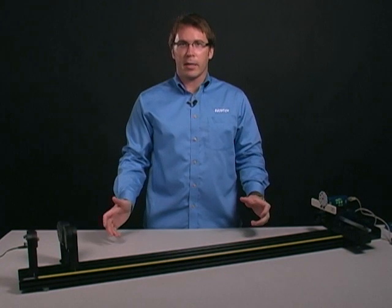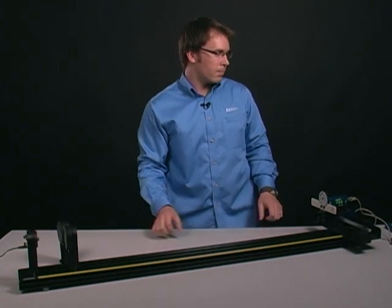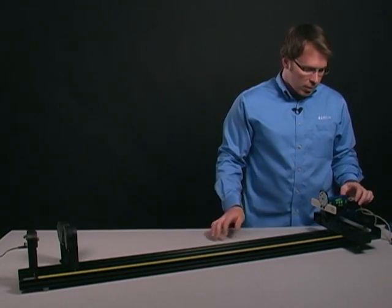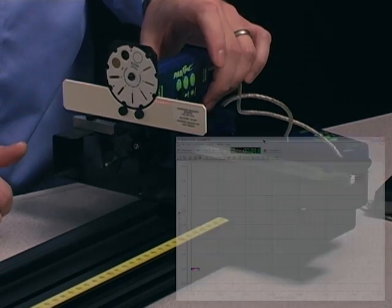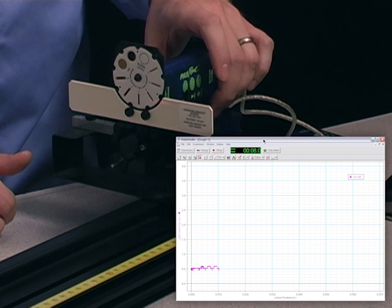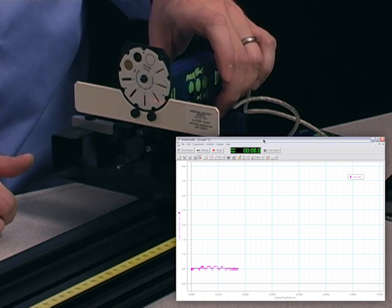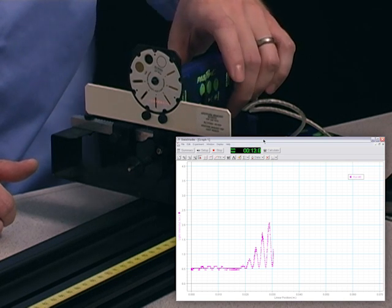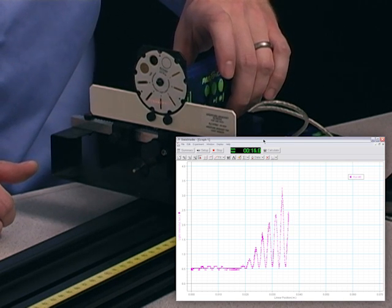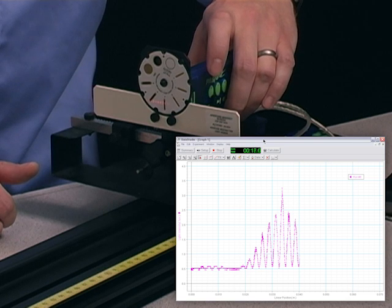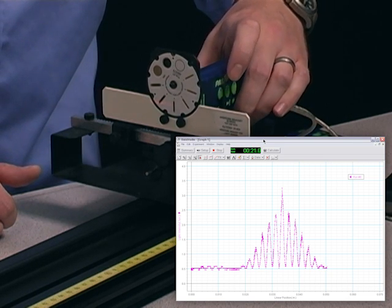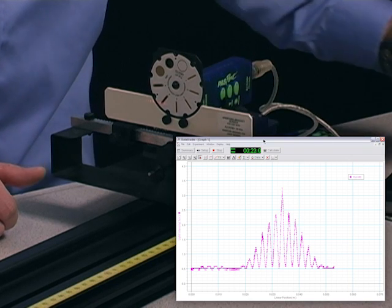Let's begin by taking a sample data set. I'm going to start recording in Data Studio, and then I'm going to carefully rotate the large ring of the rotational motion sensor across my interference pattern. Feel free to pause and adjust your hand as you go across. Once you get across the entire interference pattern, you can stop collecting data.